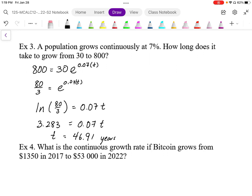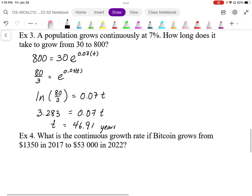Okay, so for it to grow from 30 to 800 at a 7% growth rate, it's going to take about 47 years.